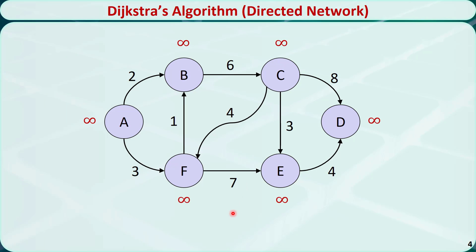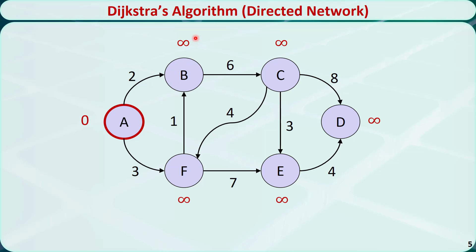The first step is to mark every node with a distance of positive infinity. Now let's start with node A. The shortest length from node A to itself is 0. Node A has two direct neighbors, node B and node F. The distance from A to B is 0 plus 2, equal to 2, which is smaller than positive infinity, so we replace it with 2. The distance from A to F is 0 plus 3, equal to 3, which is smaller than positive infinity, so we replace it with 3. Out of all the unvisited nodes, node B has the shortest distance, so we move from A to B.